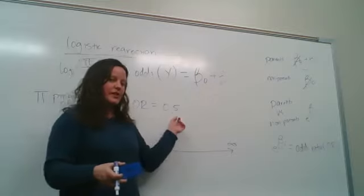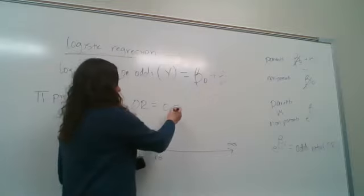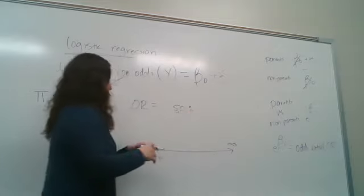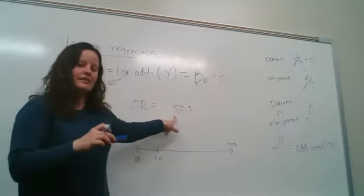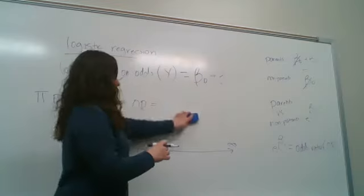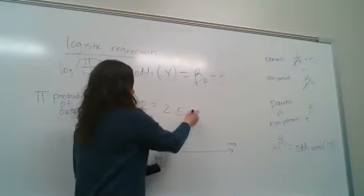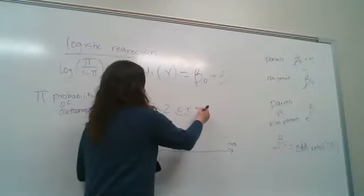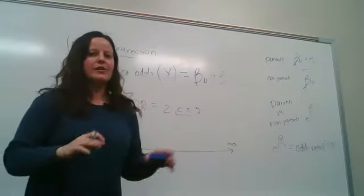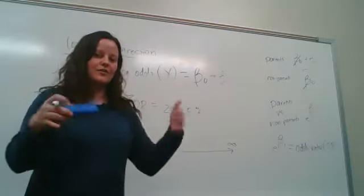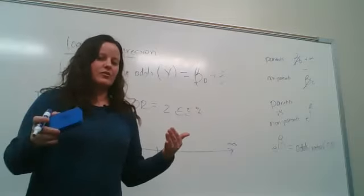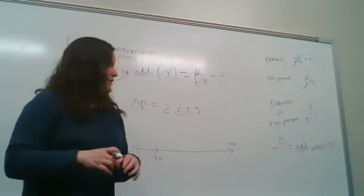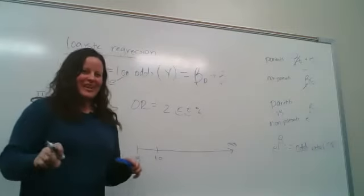If you prefer interpreting things in percentages, you can multiply the odds ratio by 100. For an OR of 0.5, you'd say they're 50% as likely to have the outcome. For an OR of 2.0, saying someone is twice as likely is equivalent to saying they're 200% as likely. So you can express it either as an x-fold difference or as x percent as likely — both are fine.